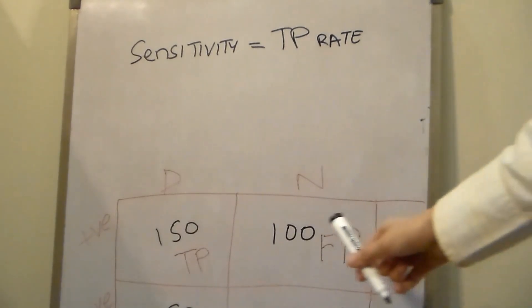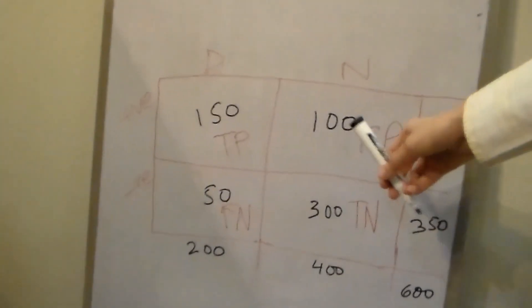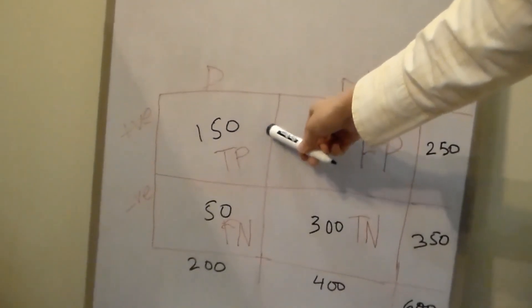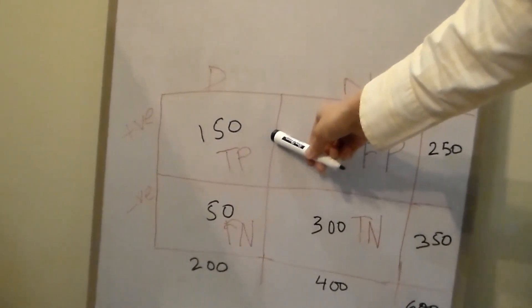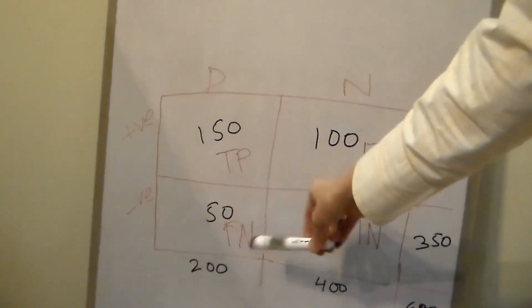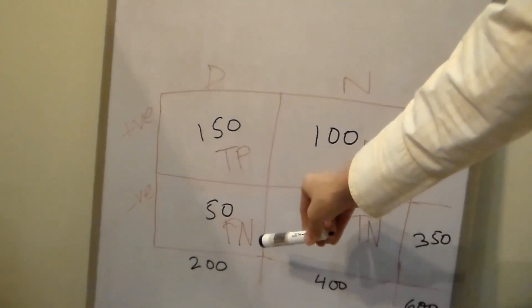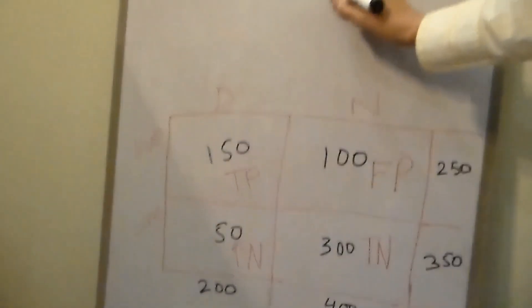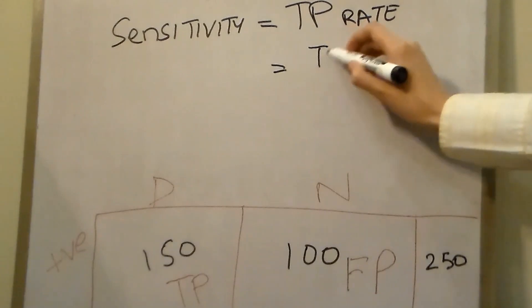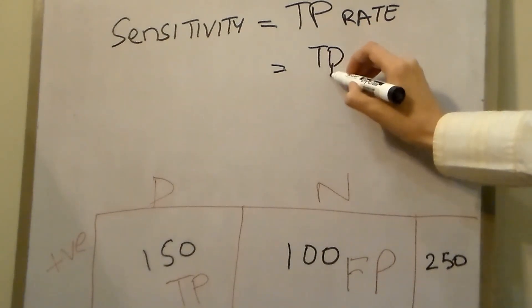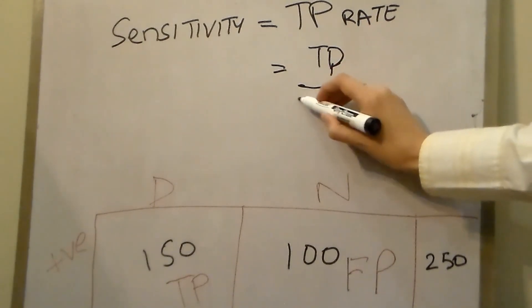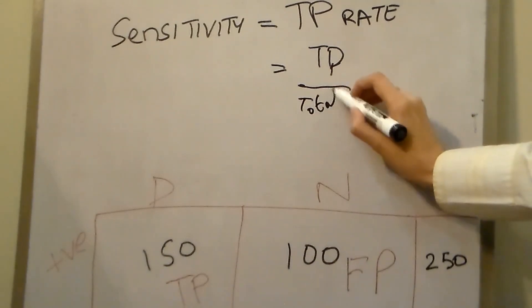From our table, this is going to be the true positive, which was 150, divided by the total number of people who had the disease, which is 200.